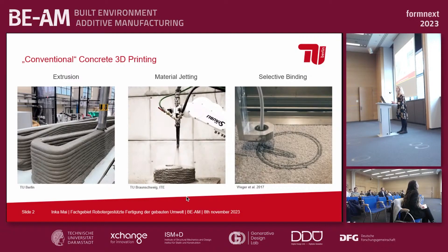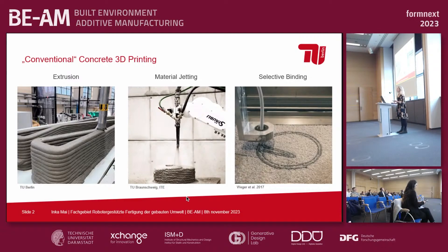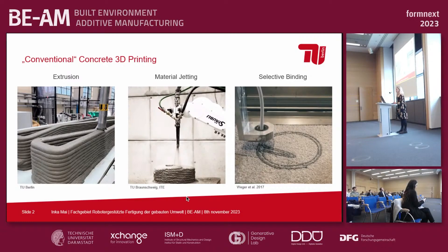Conventional 3D concrete printing, as you currently know it, subdivides into three topics: basically extrusion, material jetting, and selective binding. You already heard about the techniques earlier in the first presentation by Dirk Lokel. In extrusion, we mix our material, deliver it to a nozzle, and then apply strands and stack them upon each other. In material jetting, as for example with the shotcrete 3D printing technique shown here in the middle picture, you basically follow the same route with the difference that you add pressurized air in the nozzle. But here you still add the material layer by layer.